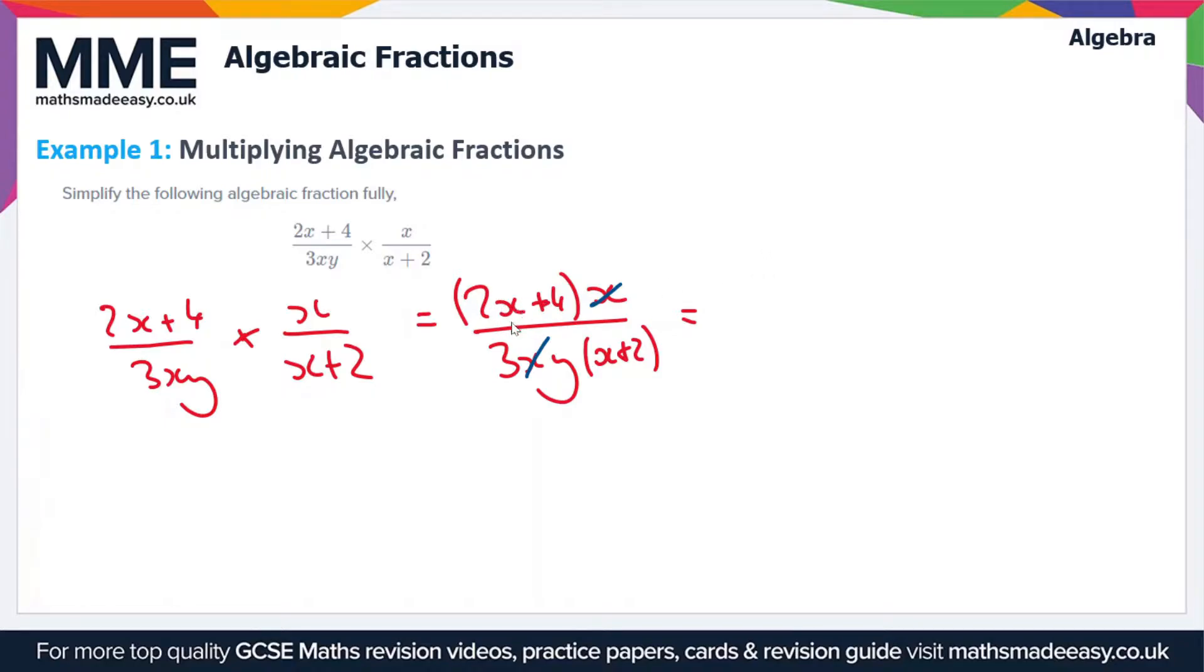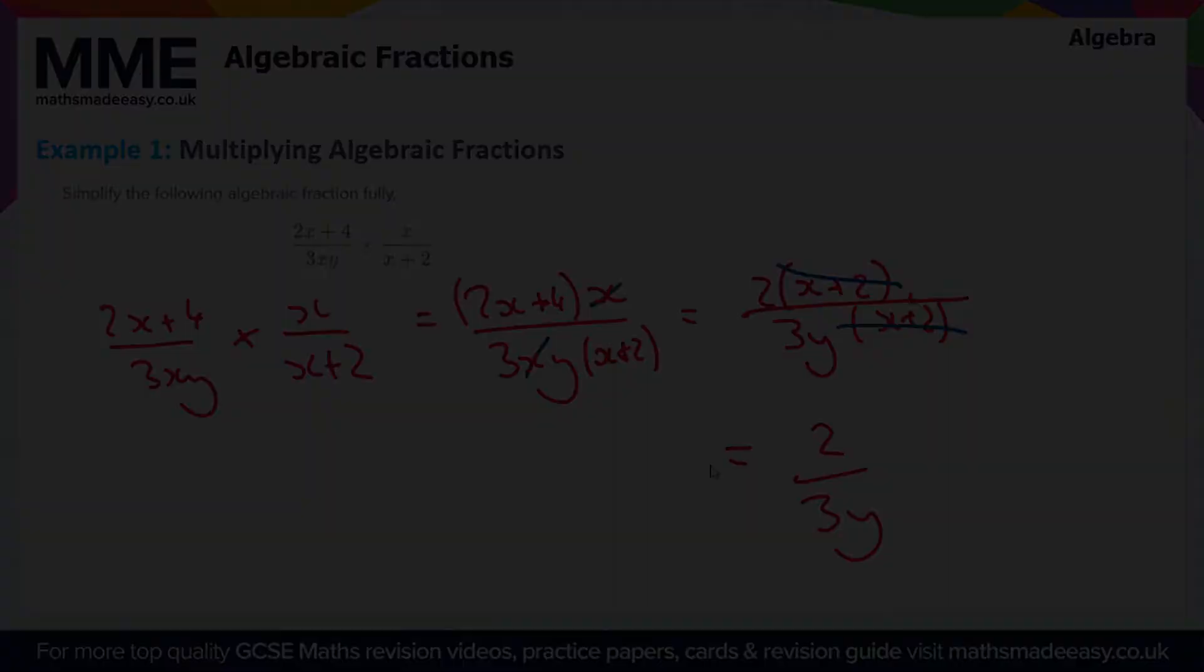But then we can also take out a factor of 2 from this bracket on the numerator to give us 2 lots of (x+2) over 3y(x+2). So we've removed the x's now from the numerators and the denominators. The (x+2) now cancels, so we're left with 2/(3y). That's the fully simplified form of the fraction.